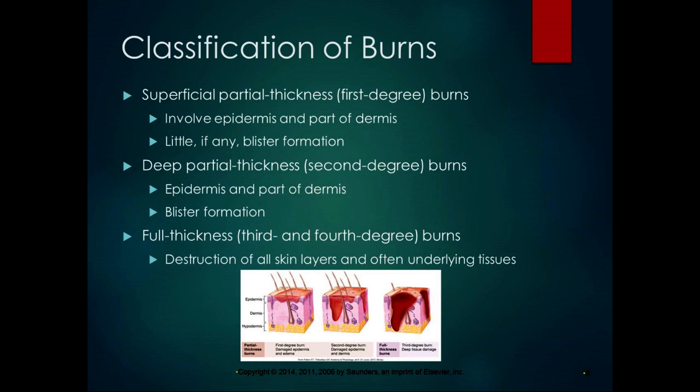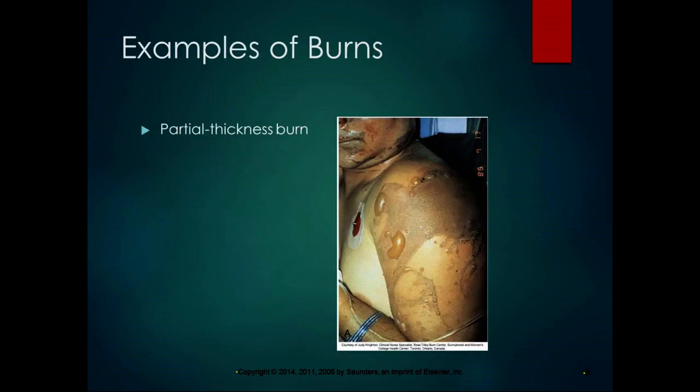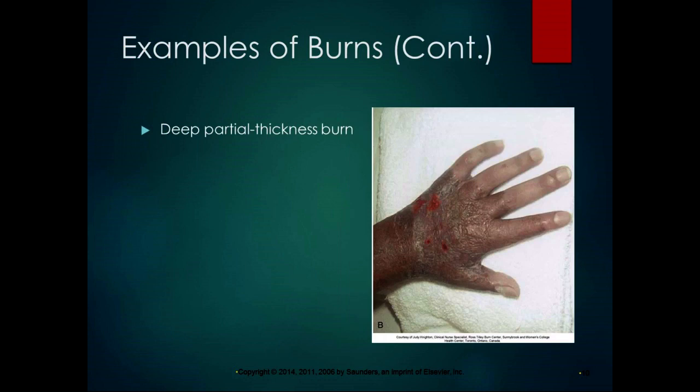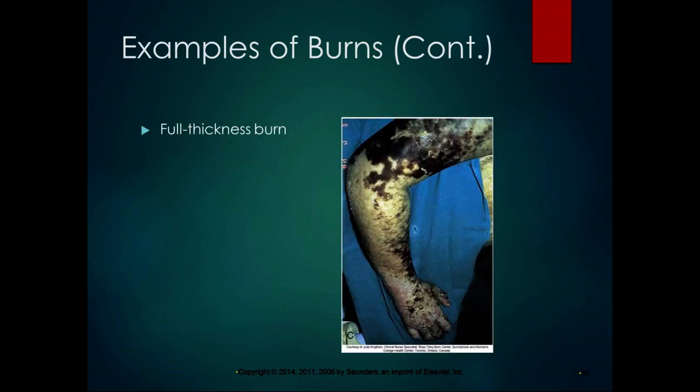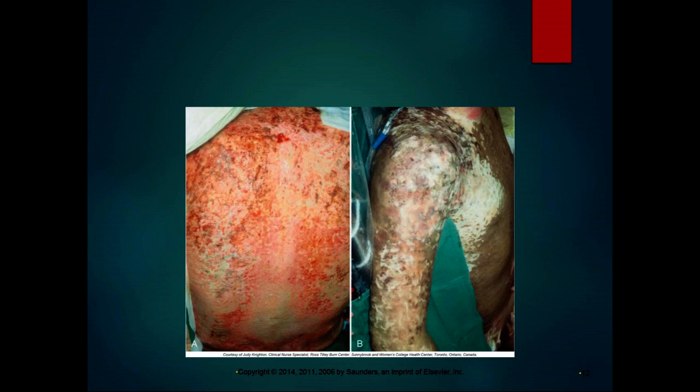Full thickness burns — third and fourth degree — cause destruction of all skin layers and often the underlying tissues including nervous tissue and connective tissue, making them very serious. With extensive burn injuries some areas may be deep full thickness burns and some partial thickness burns, so you get different types of burns through different areas of damaged tissue. This picture shows a deep partial thickness burn with icky blistering, and this one shows a full thickness burn with that black or white charred look.